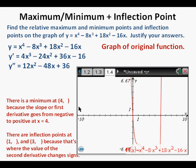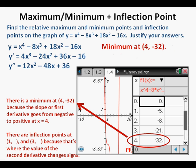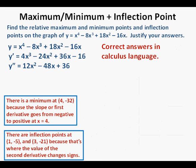Now we'll go back and graph the original quartic function y equals x to the fourth minus 8x cubed plus 18x squared minus 16x. Then we can access the table view of the function by pressing Ctrl then T on our TI-Nspire graphing calculator. We see that our minimum is at the point 4 comma negative 32, and our inflection points are at 1 comma negative 5 and at 3 comma negative 21.